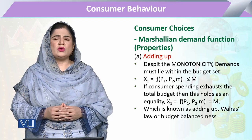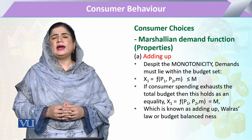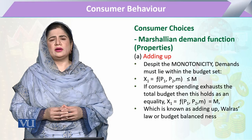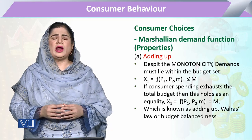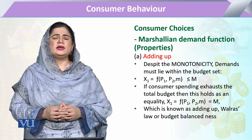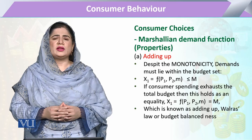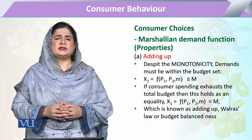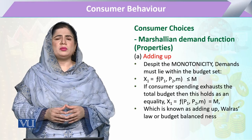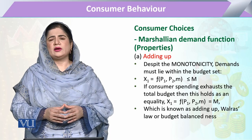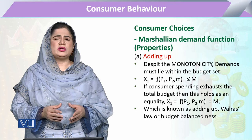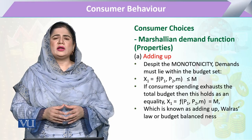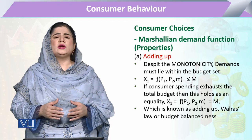The first property we are going to discuss is adding up. The property of monotonicity tells us that the consumer has a desire to grab more and more of any commodity. But when we add up all his desires, there should be a limit. That limit tells us that the total desired quantity, when added up, should at least be equal to or less than the budget line — it should not exceed it.